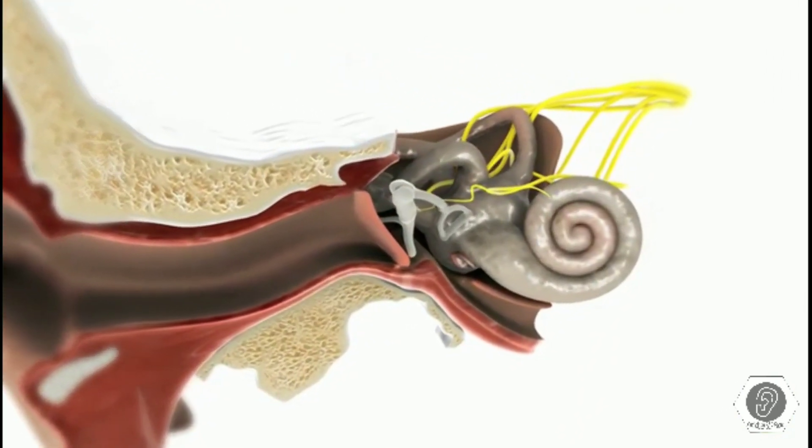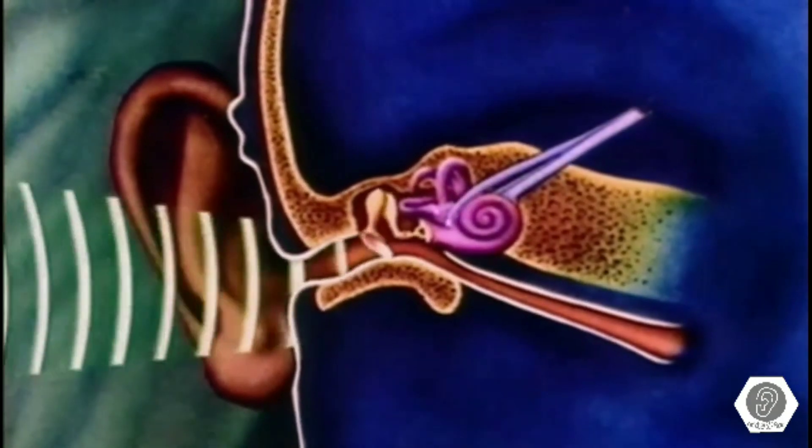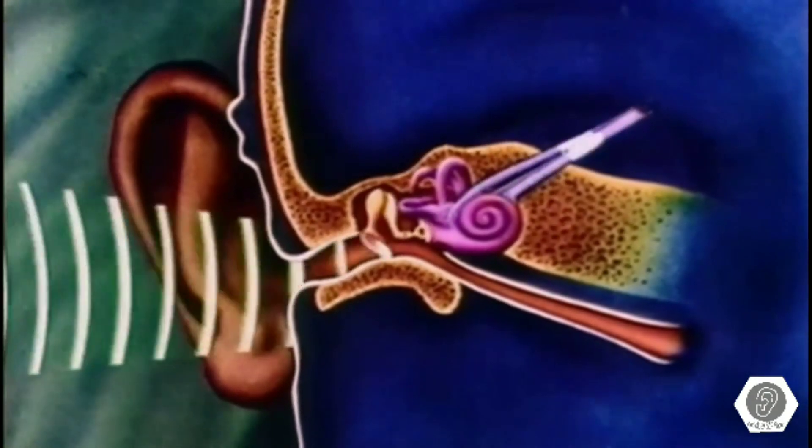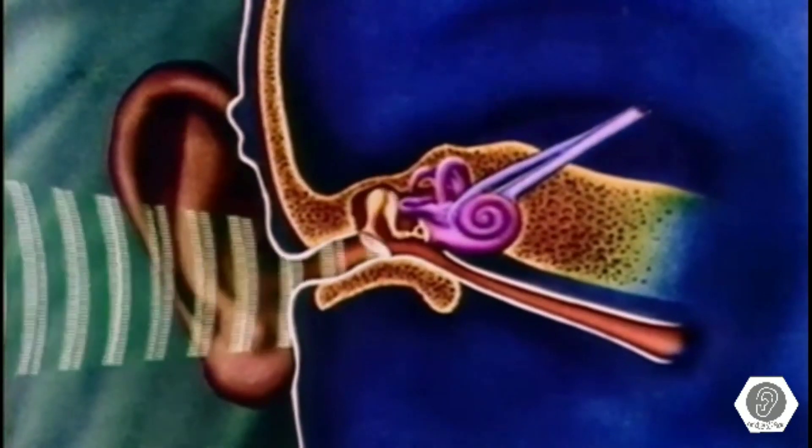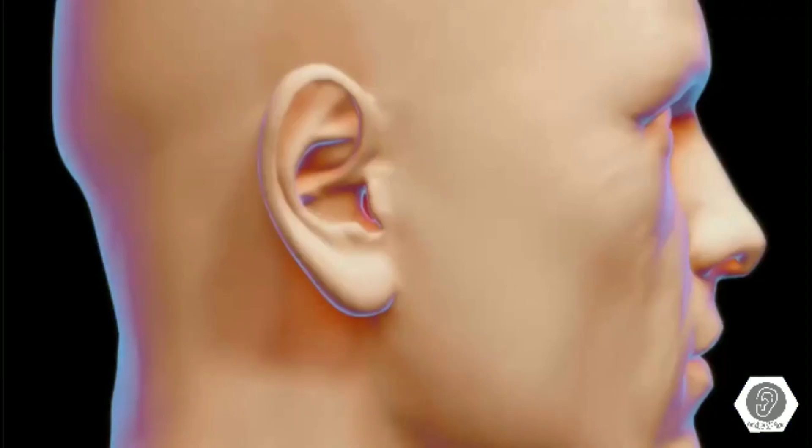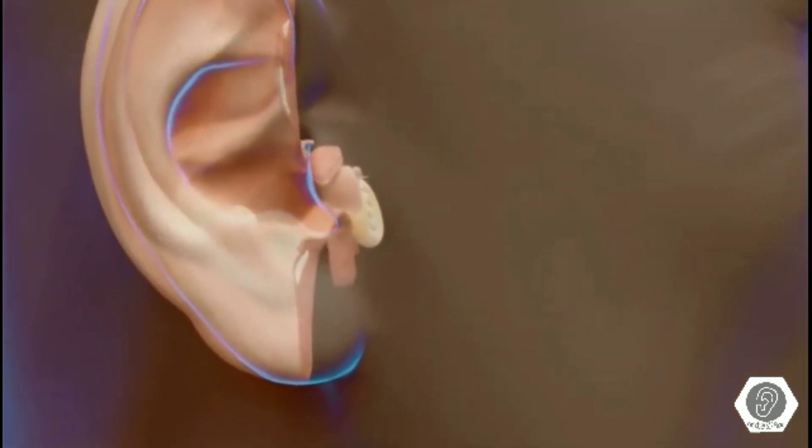This fluid movement causes sensitive hair cells within the cochlea to bend. When the hair cells bend, they generate an electrical signal that is sent to the brain. Age, disease, injury, or repeated exposure to loud noise can damage the various structures of the ear and interfere with hearing.